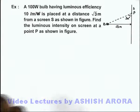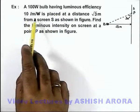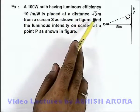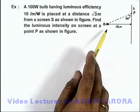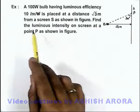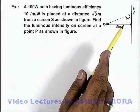In this example, we are given that a 100W bulb having luminous efficiency 10 lumens per watt is placed at a distance √3 meters from a screen S, as we can see here. We are required to find the luminous intensity on screen at a point P as given in the figure.